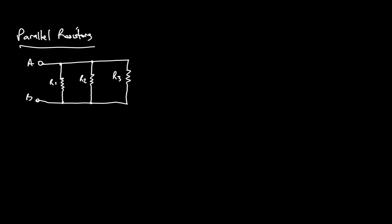You can see the sense in adding resistances together when they are in series — that makes a lot of sense. But what about parallel? You may already know the formula, but wonder where it comes from. Let me explain a concept known as admittance. Admittance is given the symbol Y, and it is simply one over the resistance.